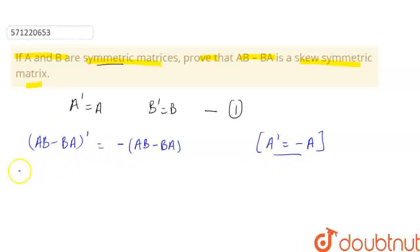So, we'll take LHS first. AB minus BA transpose equals, we can write it as AB transpose minus BA transpose because we have an identity for this that A minus B transpose equals A transpose minus B transpose.